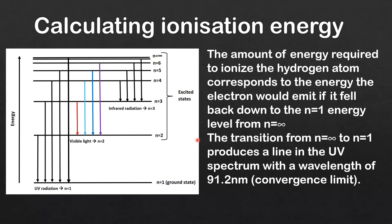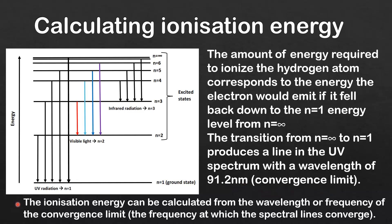The transition from n equals infinity to n equals 1, represented by this arrow, produces a line in the UV spectrum with a wavelength of 91.2 nanometers — that is the convergence limit. The ionization energy can be calculated from the wavelength or frequency of the convergence limit.